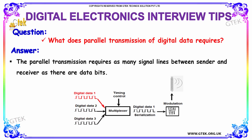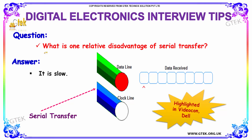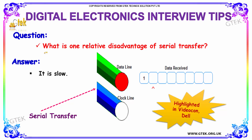The next question is: what does parallel transmission of digital data require? The parallel transmission requires as many signal lines between sender and receiver as there are data bits. The following question asks about the disadvantage of serial transfer. The answer is: it is slow.